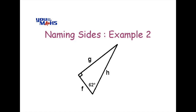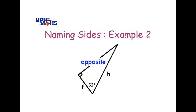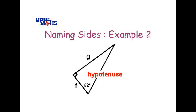Pause the DVD again and see if you can work out the sides here. Here are the answers to this example. First of all, find where the 62 degrees is. The side next to that is called the adjacent. The side opposite is called the opposite side. Now the hypotenuse is next to the 62-degree angle as well, but because it's the longest side and away from the right angle, it's always labelled the hypotenuse.